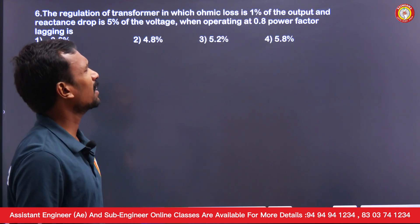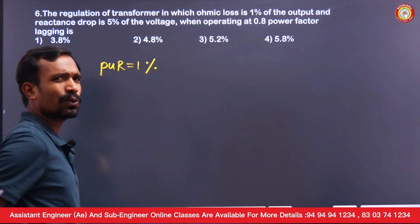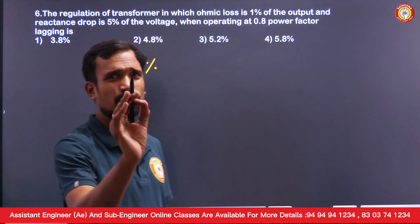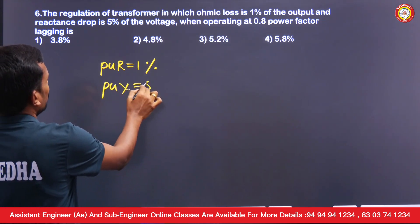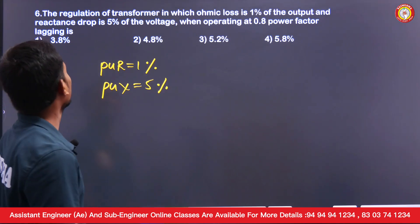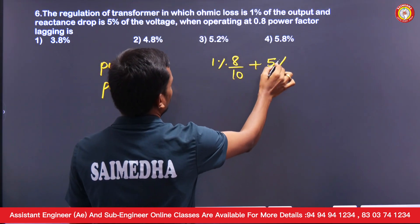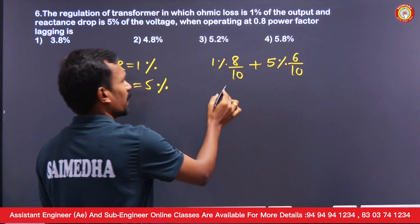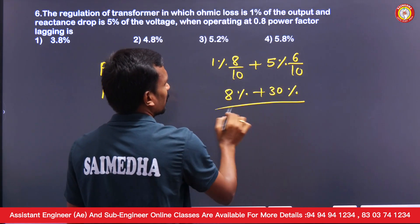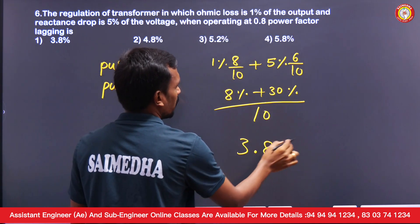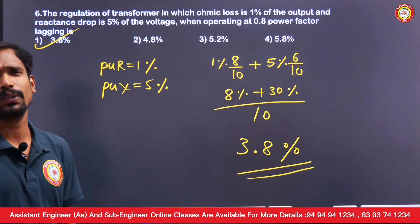Next question: the regulation of a transformer where ohmic losses are 1%. Remember: ohmic losses equals per unit resistance. Voltage regulation at 0.8 lagging power factor = per unit R × cos φ + per unit X × sin φ = 8%/10 + 30%/10 = 38%/10 = 3.8%.